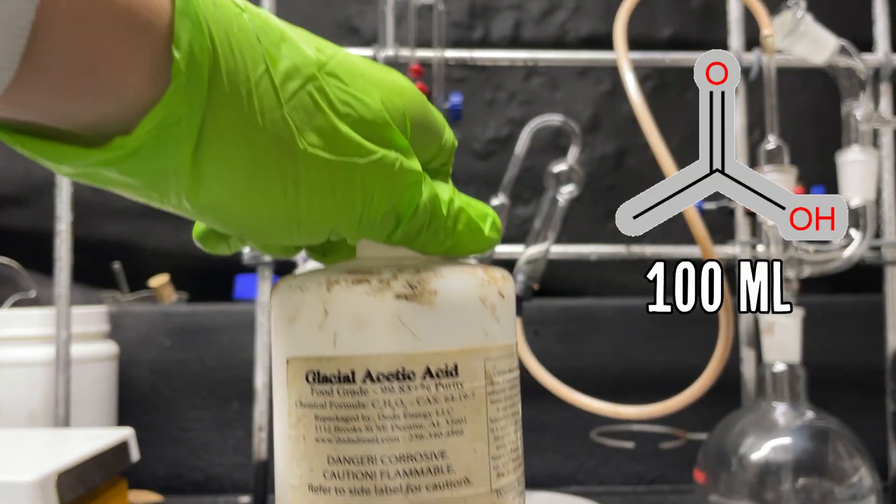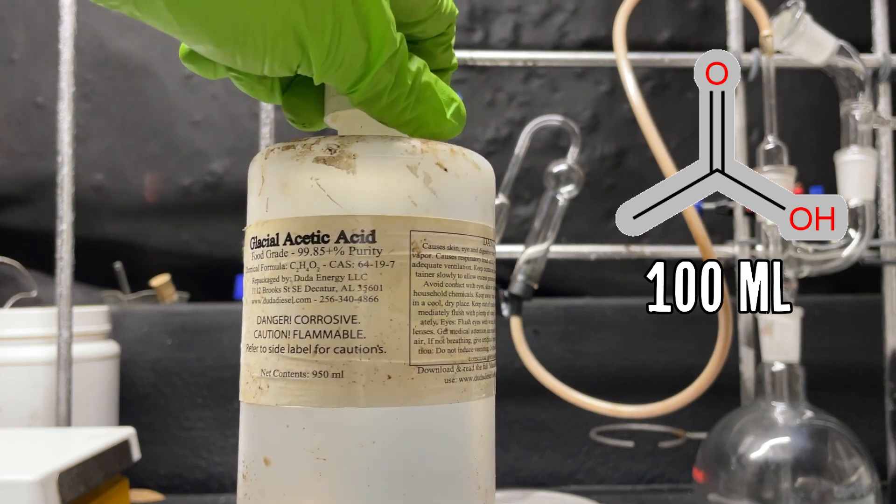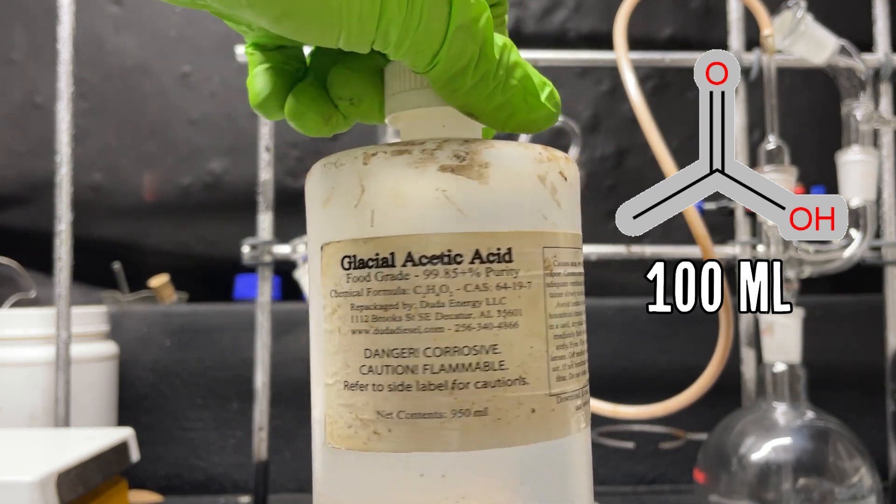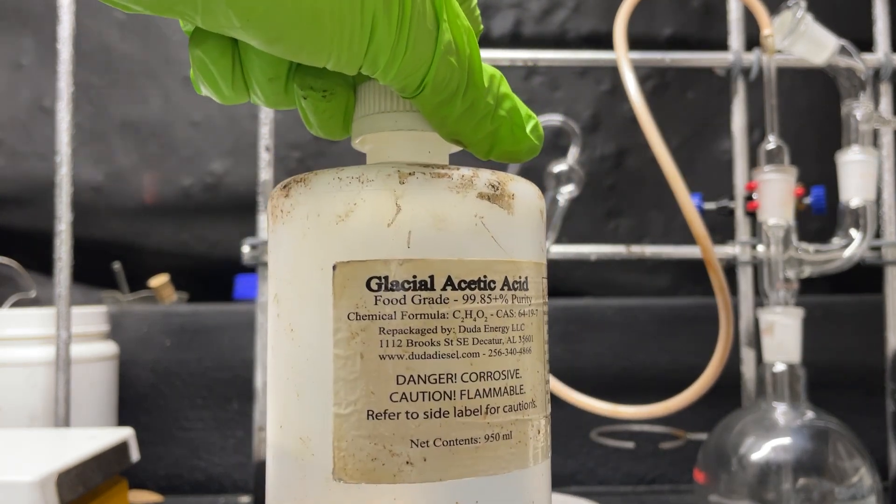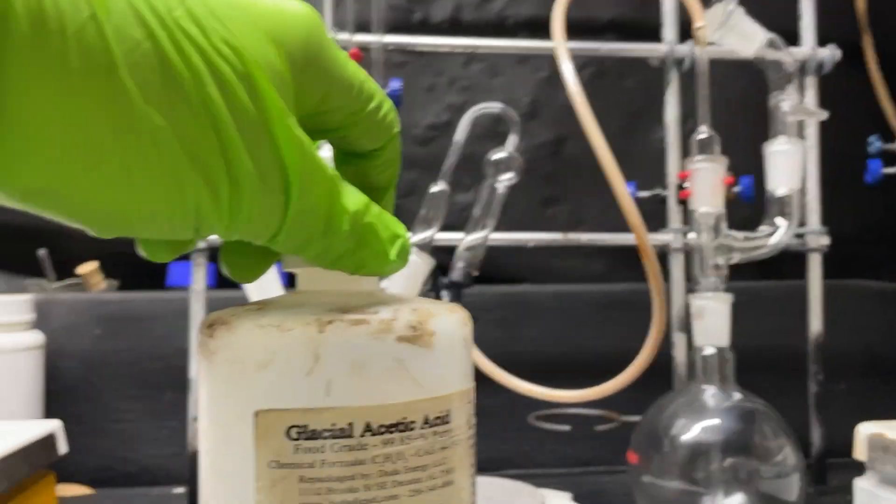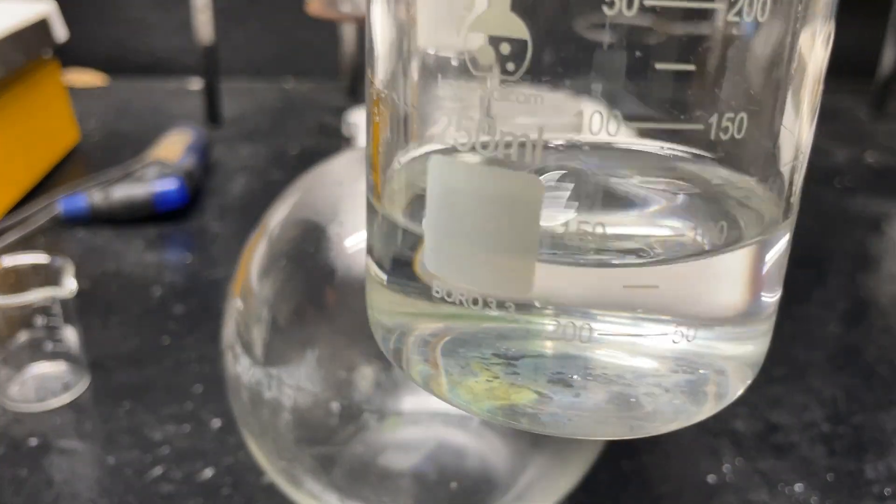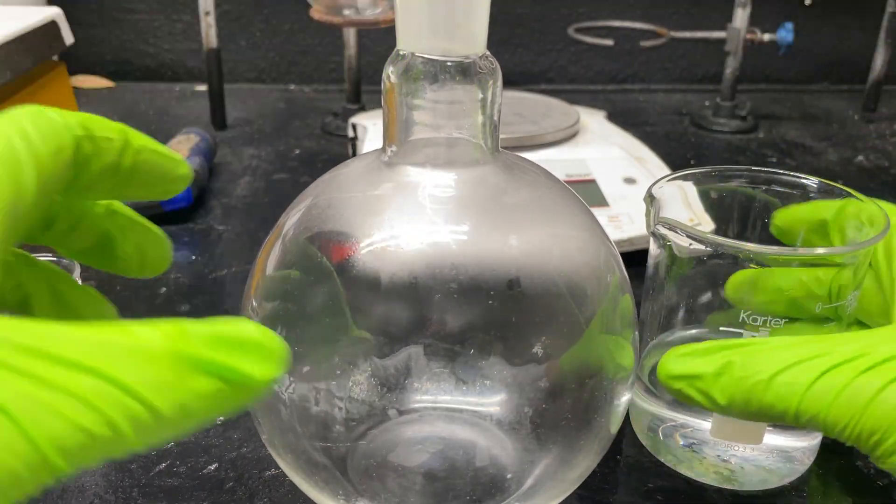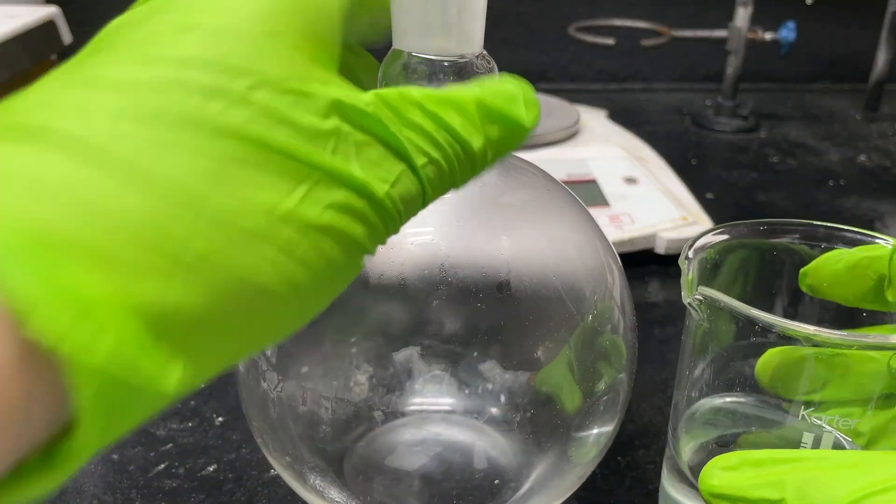To make our mace we're first going to need glacial acetic acid, which is pure acetic acid. Yeah don't sniff this stuff, it will burn. I've learned the hard way. Some British person's gonna go wild over this - pure vinegar, holy crap.